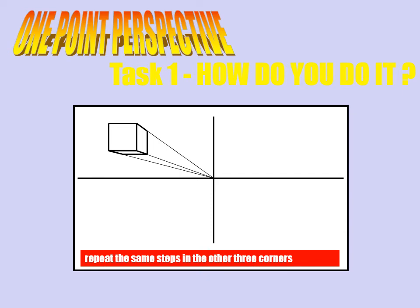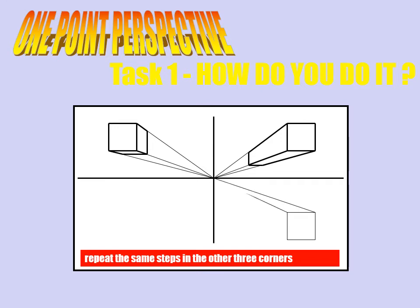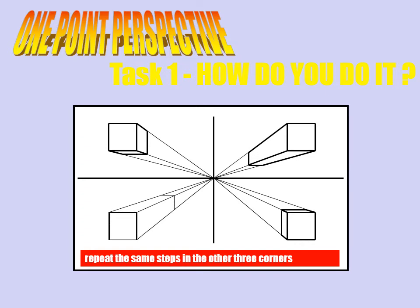So here we've got a cube which is in one point perspective. What you're going to do next is repeat that exercise in the other three corners. It doesn't matter what size you make the cuboid — this one here you can see it's much longer, or this one down in the bottom is much smaller, or the last one, again much longer.